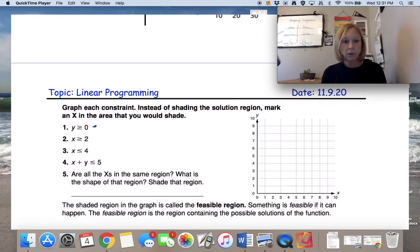Y is greater than or equal to 0. So a line that starts with y equals is a horizontal line. And I would shade above that line.